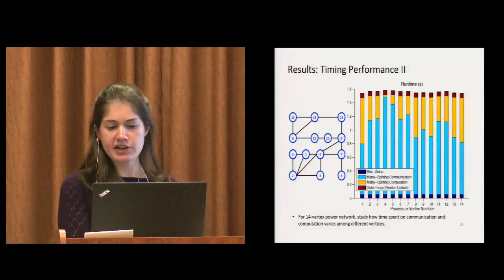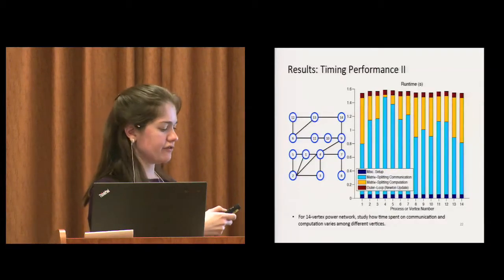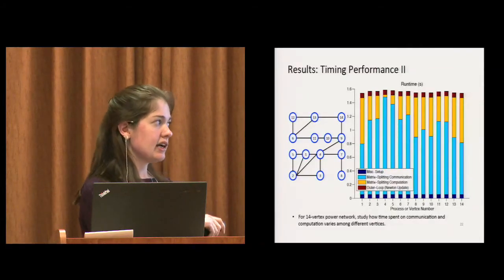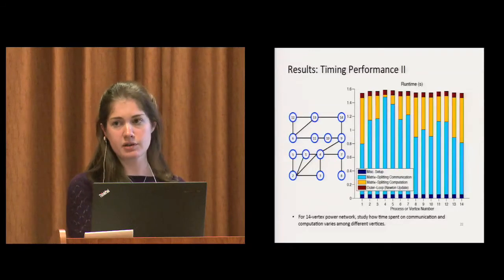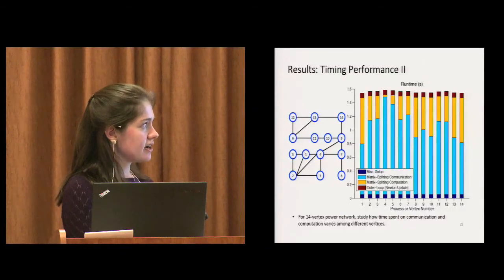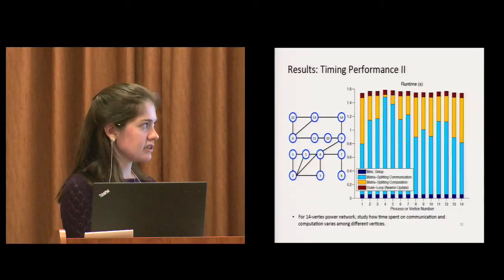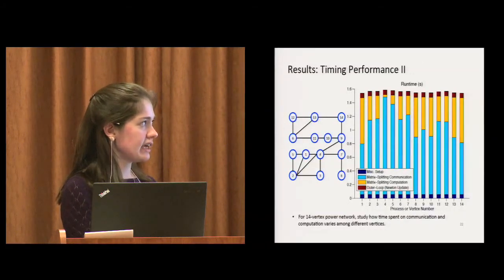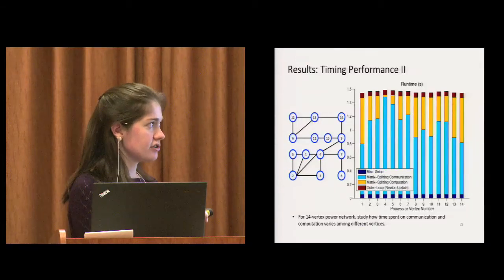The last figure I have, I was just looking at the 14 vertex network. I wanted to see how the communication time is varying amongst different processes. One interesting thing is vertex 4 or process 4 spends the most time communicating. It also has the largest number of neighbors.